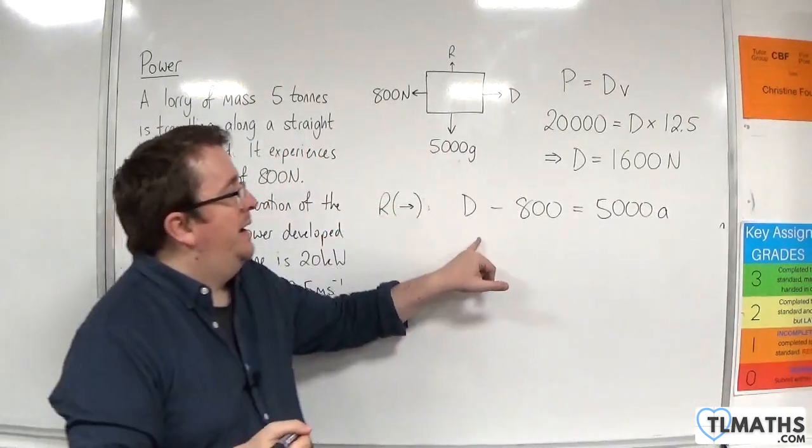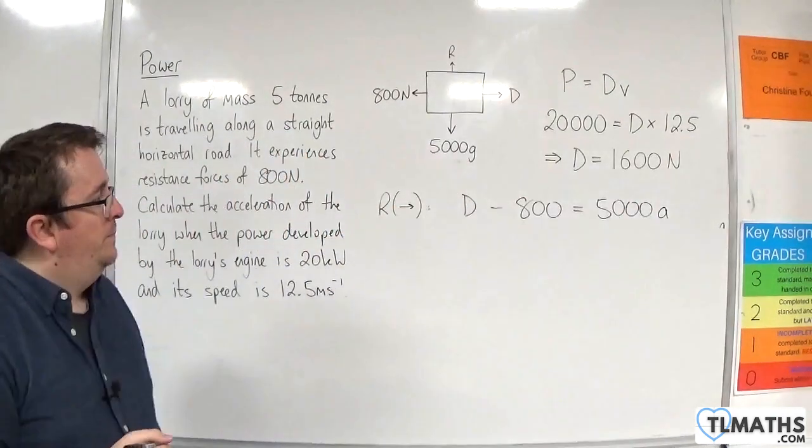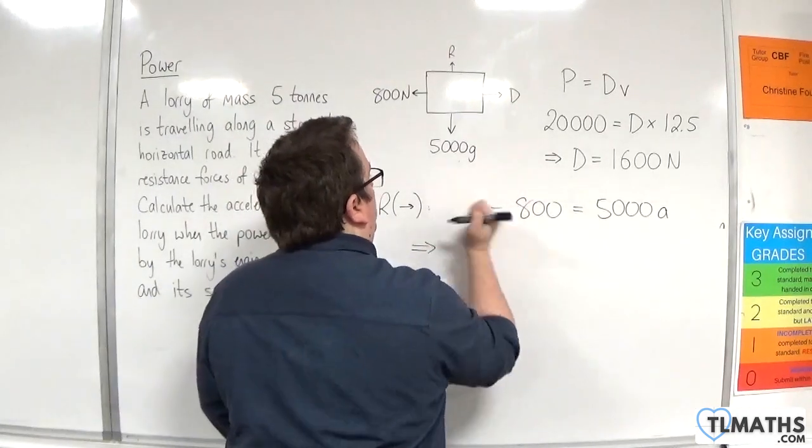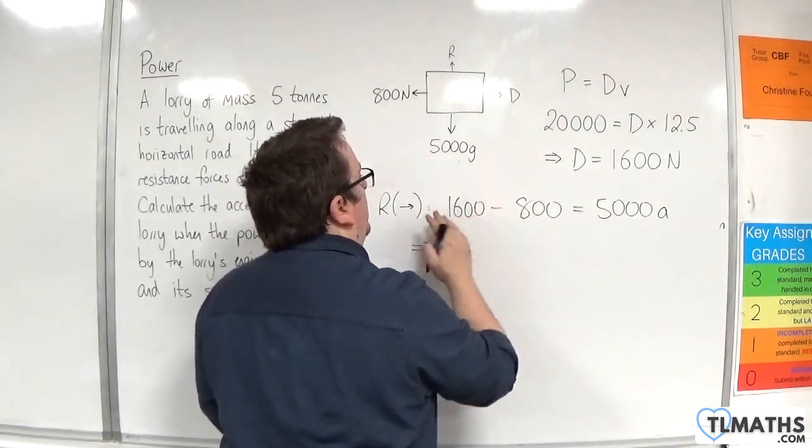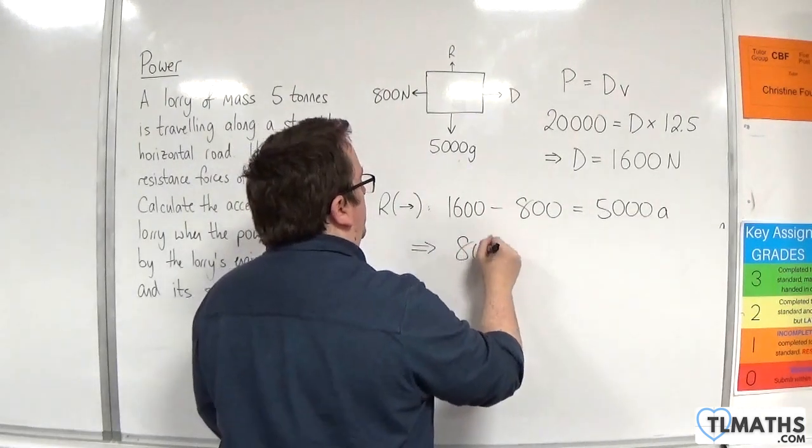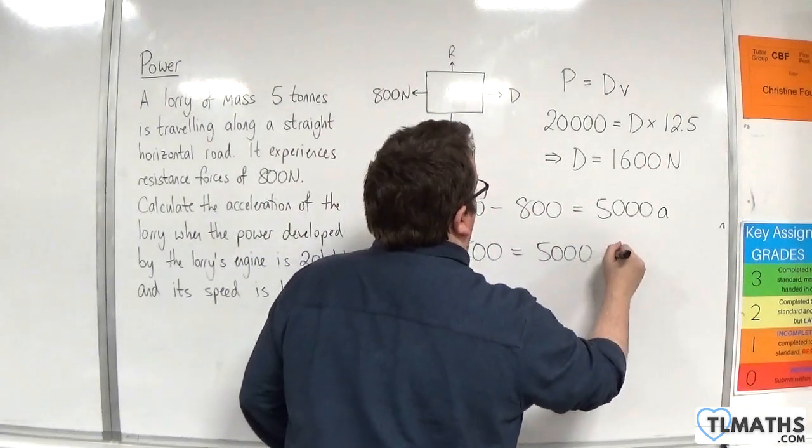Now we've just calculated d. It's 1,600. So we've got 1,600, take away 800, which is 800, equal to 5,000 A.